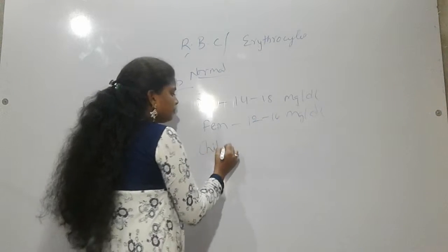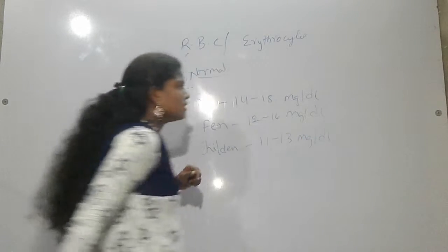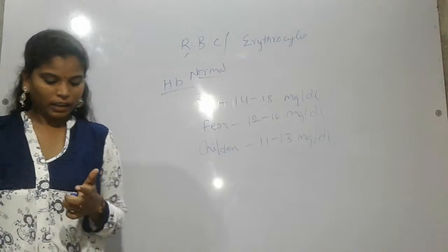In children, it is 11 to 13 mg per dl. This is the normal level of our hemoglobin.